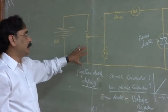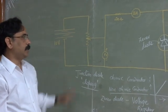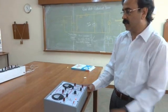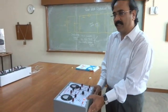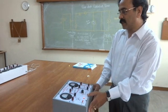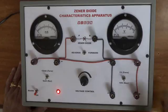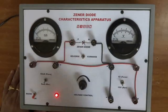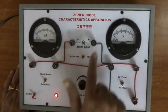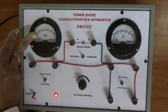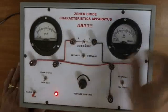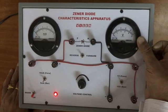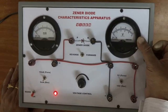Now let us observe the characteristic curves of the Zener diode practically. This is a device to demonstrate the Zener diode characteristic curves. In this circuit, the Zener diode is connected in reverse bias. The ammeter is measuring the current and the voltmeter is measuring the potential difference across the Zener diode.